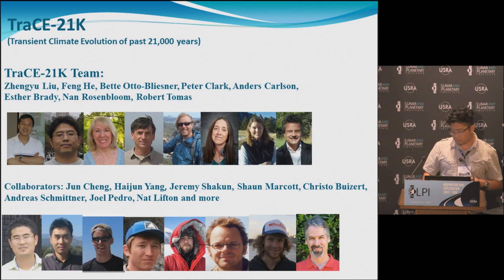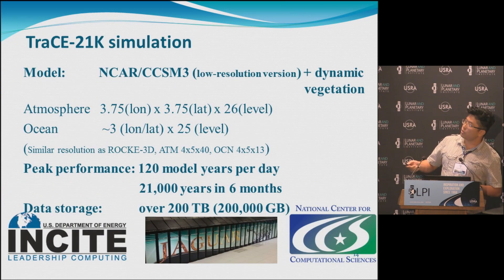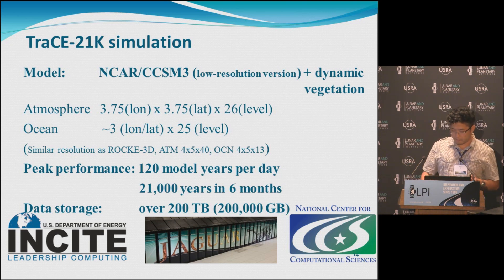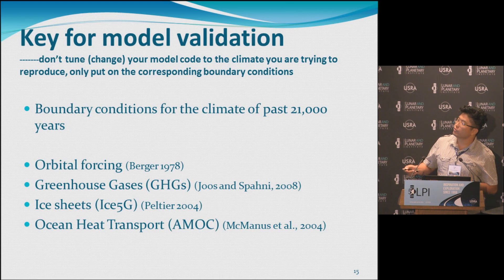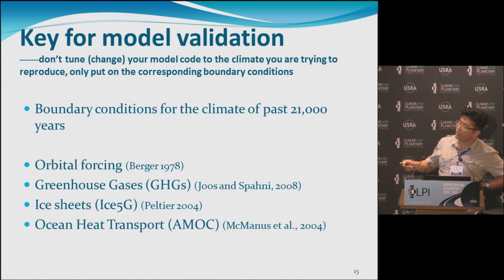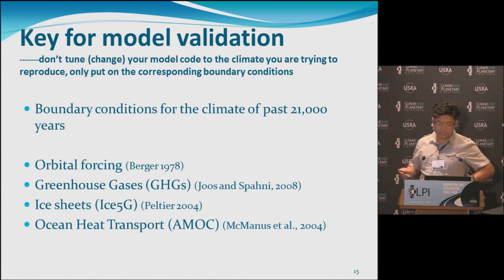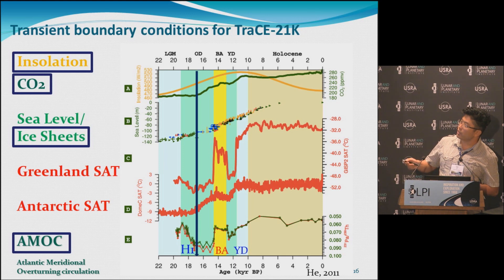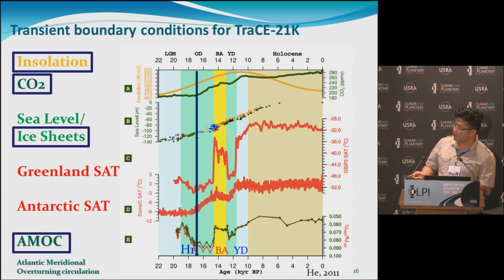This is a large project, and what we use for that is the NCAR CCSM3 — it's about a 10-year-old model, and the resolution is very similar to Rocky 3D. The boundary conditions are orbital variation, greenhouse gases, ice sheets, and the AMOC. I want to emphasize that for model validation we don't tune the model — we basically use the same model as for IPCC and just put on the boundary conditions: insolation, CO2, ice sheets, and AMOC.